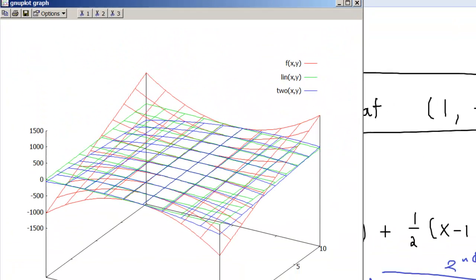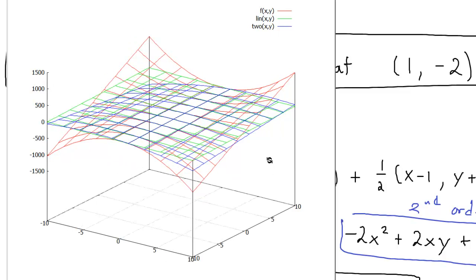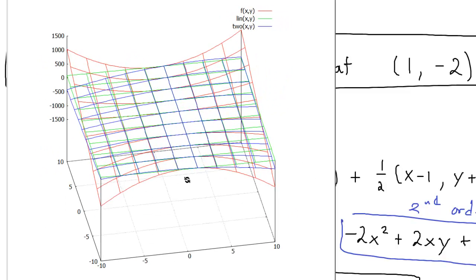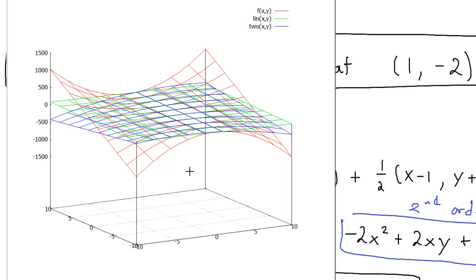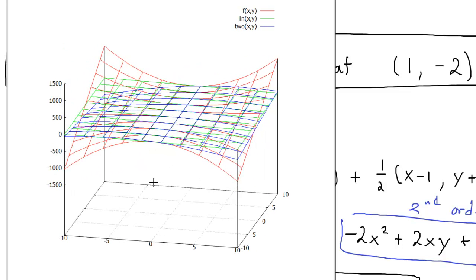Make this a little bit more square. Put a grid down there. And you can see f(x,y) is red. The tangent plane is green. And the second order approximation is blue. And as we rotate and zoom, we can see that the tangent plane does a pretty decent job of it. But the second order does an even better job. Which is what we would expect.